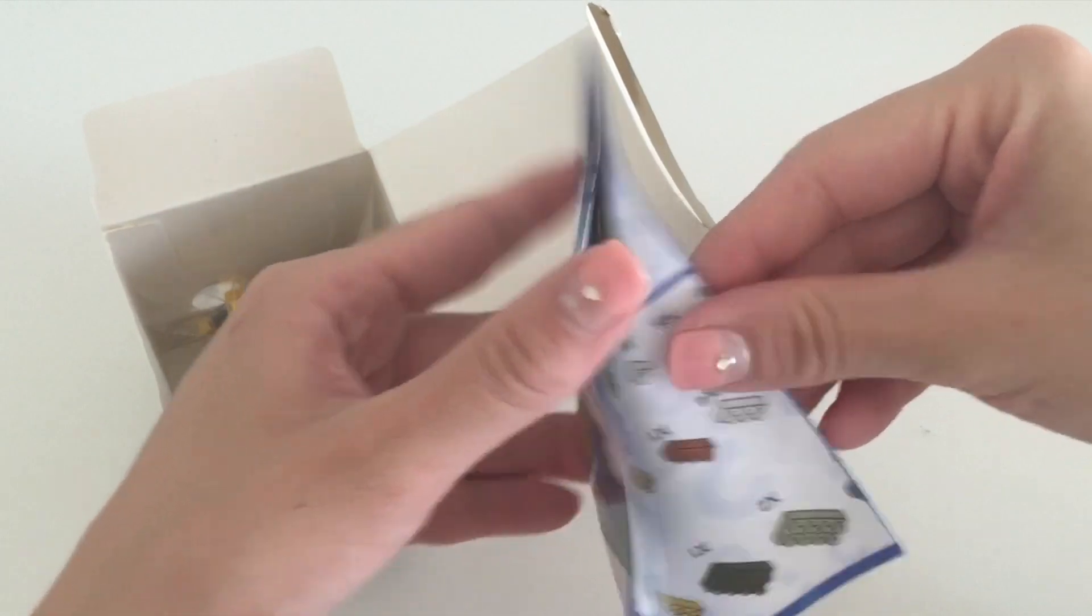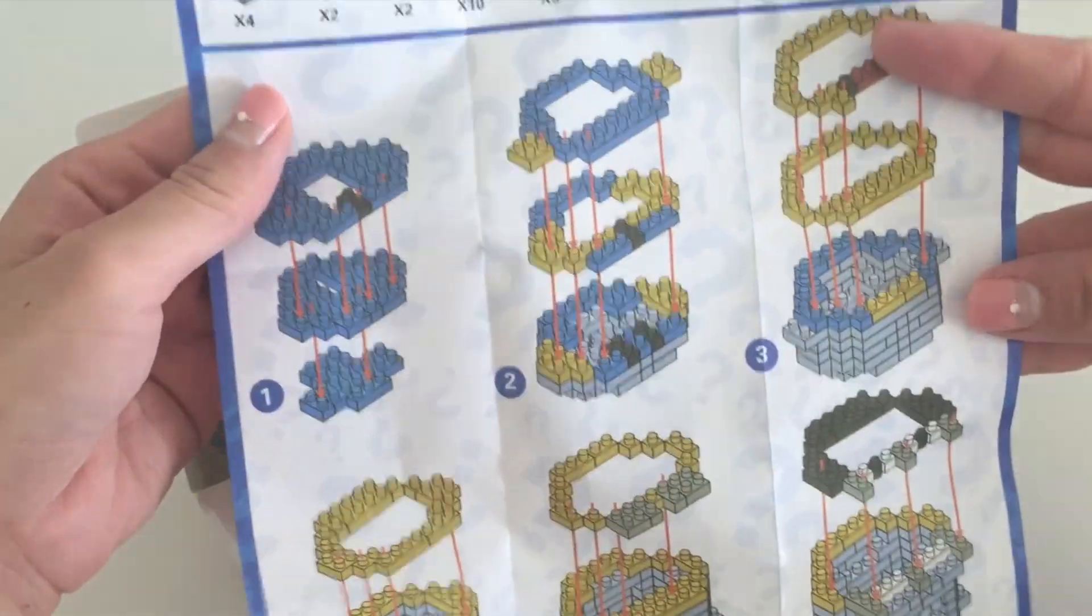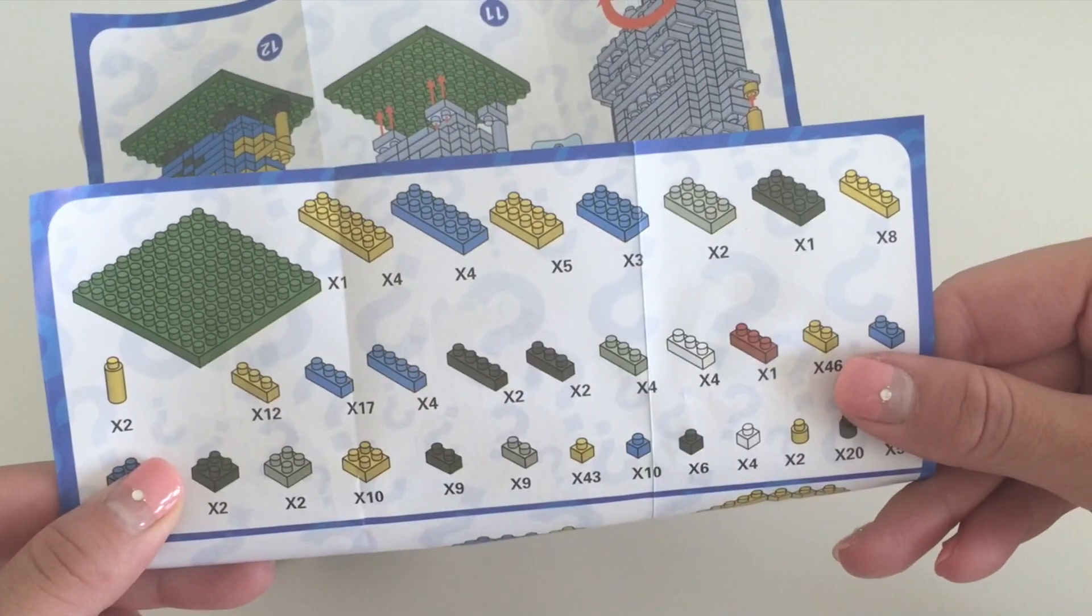When you open up the box they come with some instructions. It's just a sheet of paper that has all the materials you need to create this project and step-by-step instructions on how you put it together.